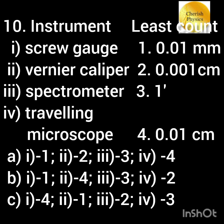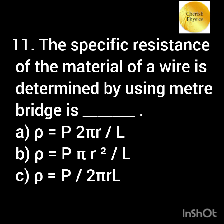Match the corresponding least count value with their correct measuring instruments. The specific resistance of the material of a wire determined by using a meter bridge is: Option A: ρ = p × 2πr / L. Option B: ρ = p × πr² / L. Option C: ρ = p / 2πr.